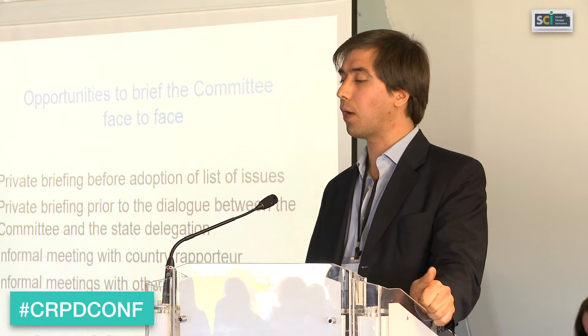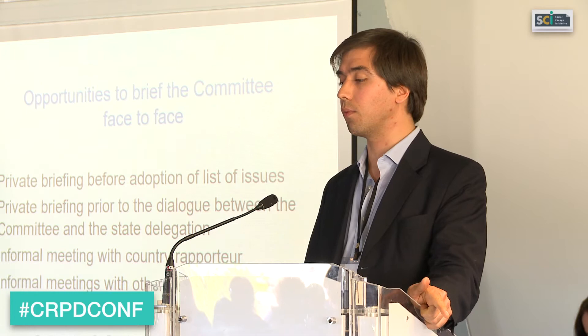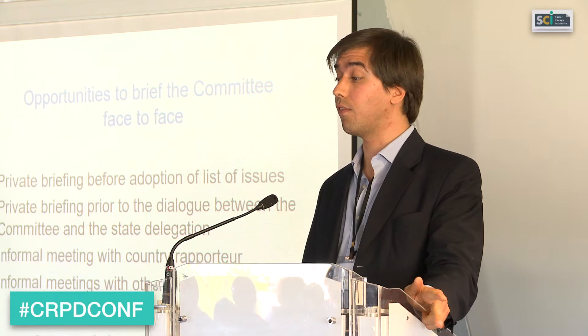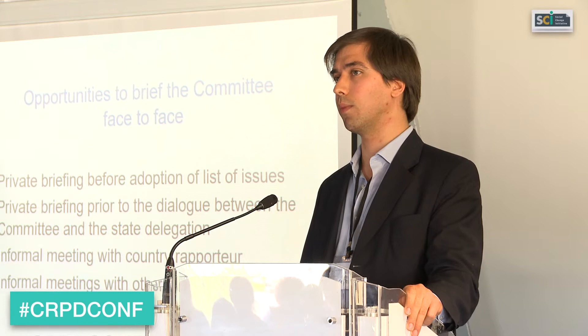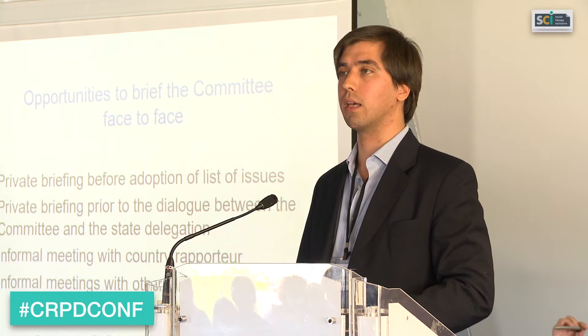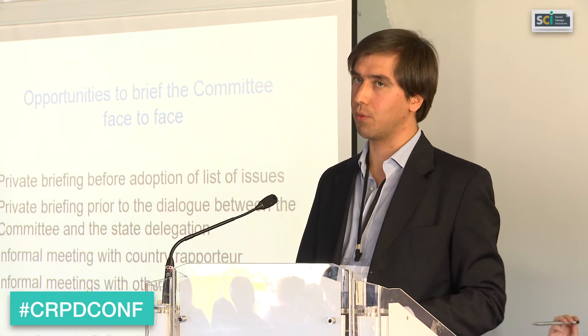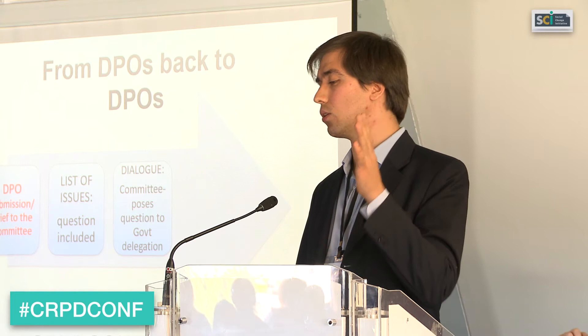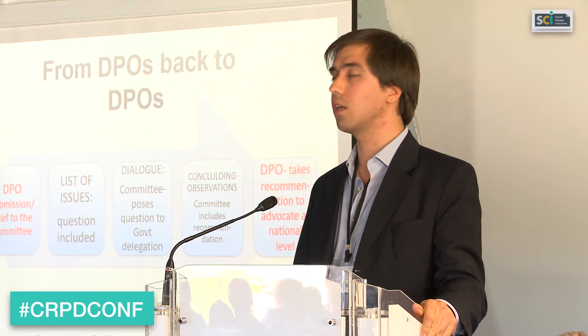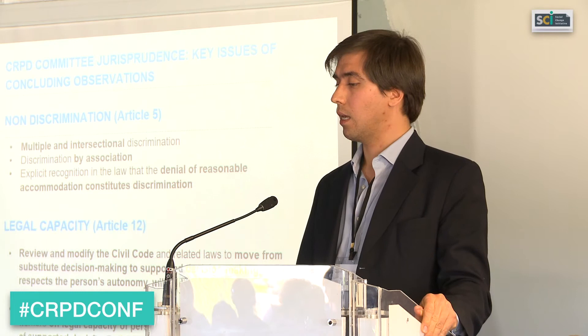To summarise, opportunities for organisations to brief the committee face to face include: a private briefing before the adoption of the list of issues, a private briefing prior to the dialogue between the committee and the state delegation in Geneva, and informal meetings with the country rapporteur — the committee member in charge of the country — and other committee members. This entire process from when the committee decides to include a country for review takes around one to one and a half years, and the cycle repeats itself every four years, bringing information from organisations through submissions and meetings into the concluding observations for use at the national level.